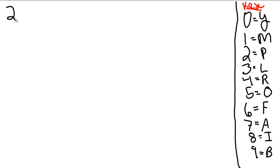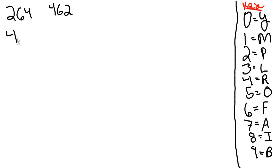So why don't we pick the number 264? It's a pretty good number. Now, reverse it. So we have 462, and now subtract the larger one — 462 — from the number you originally picked. 462 minus 264 equals 198.